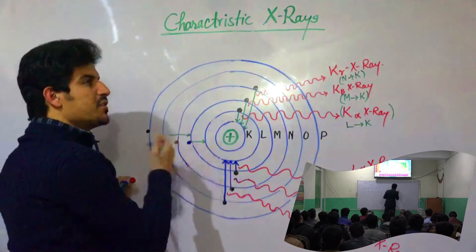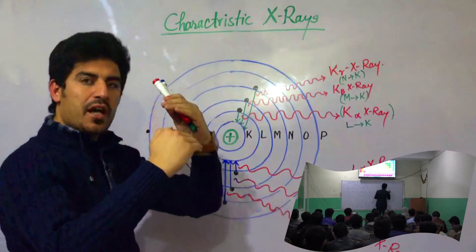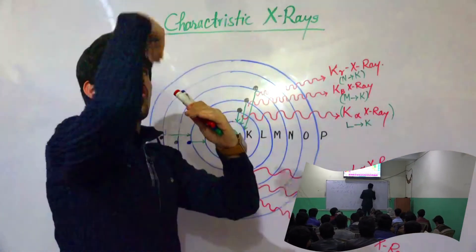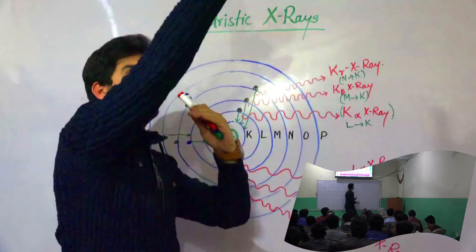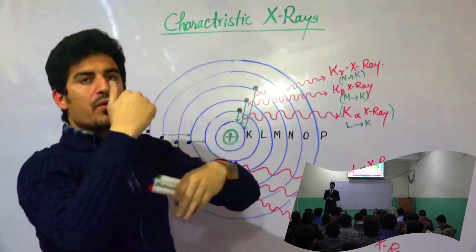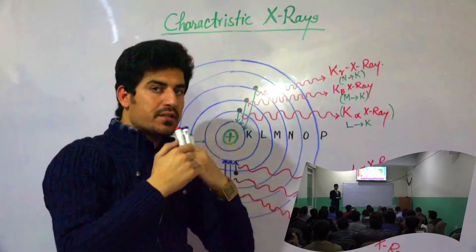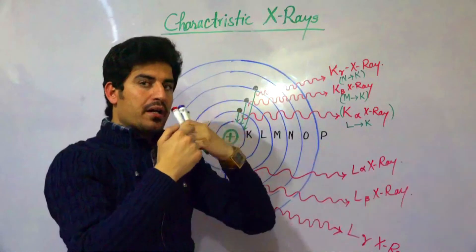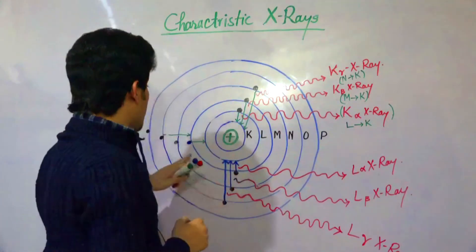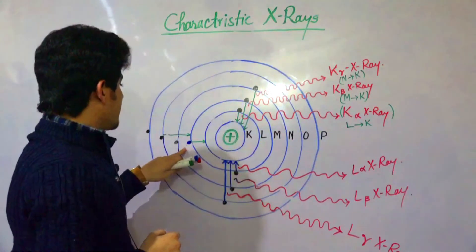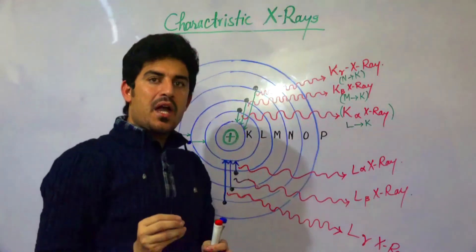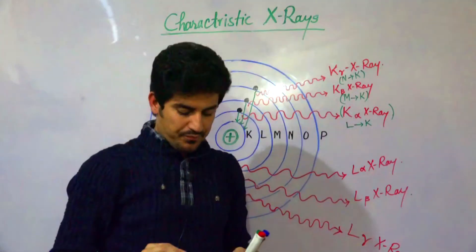In the same way, we have the M-series. If we consider the M-shell transitions, we get M-alpha, M-beta, and M-gamma X-rays, and together these are called the M-series of X-rays.